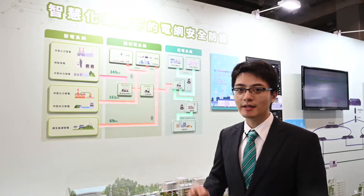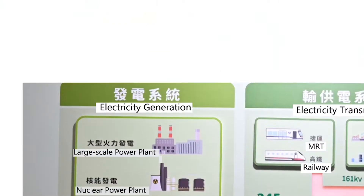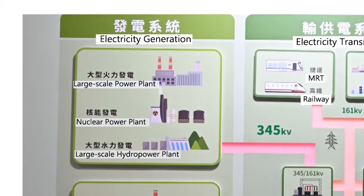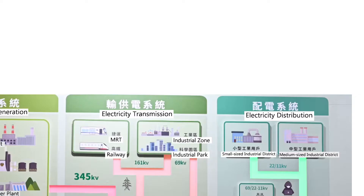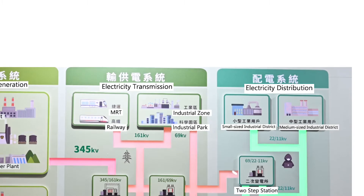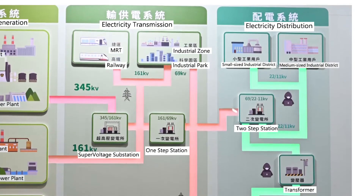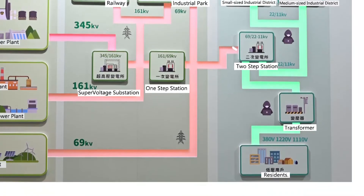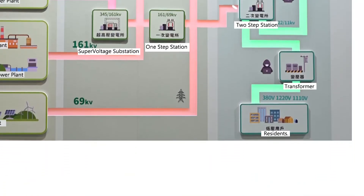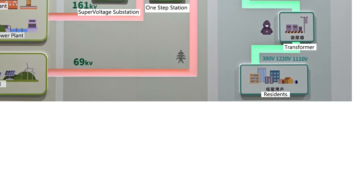The poster behind me is a simplified diagram of the power grid. The electricity we all use is generated from the power plants on the left-hand side, then delivered to consumers through the transmission and distribution networks. The whole grid is made of substations and power lines. The major parts where cybersecurity is applied are substation automation systems.